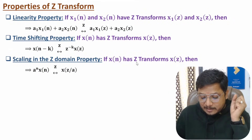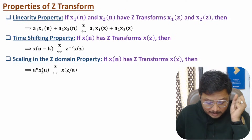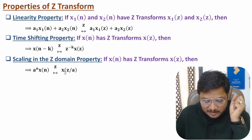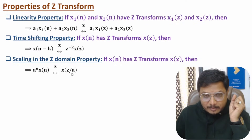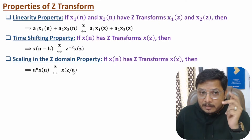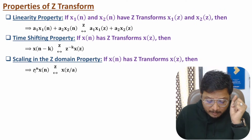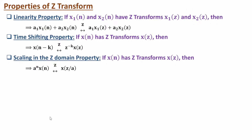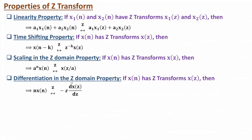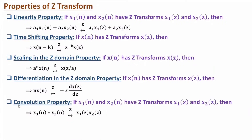The third property is scaling in the Z-domain. If you have signal x(n) with Z-transform X(z), then for the signal a^n * x(n) there will be scaling in the Z-domain as X(z/a). The fourth property is differentiation in the Z-domain: the Z-transform of n*x(n) is minus z times dX(z)/dz.